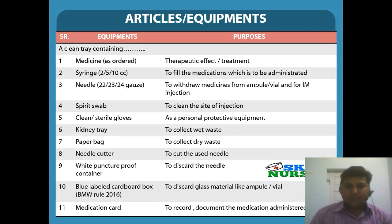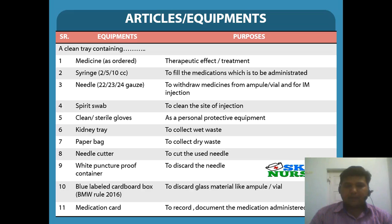All the articles and equipment required for this procedure include: a clean tray which contains medicines prescribed by the doctor for therapeutic effect and treatment; appropriate size of syringes from 1 ml to 10 ml to fill the medications to be administered; needles of gauge 24, 23, or 22 to draw and administer the medication intramuscularly; spirit swabs to clean the site of injection; clean sterile gloves as personal protective equipment to prevent cross-infection; kidney tray to collect wet waste; paper bag to collect dry waste; needle cutter to cut the used needle; and ampoule cutter if the medicine is in an ampoule.